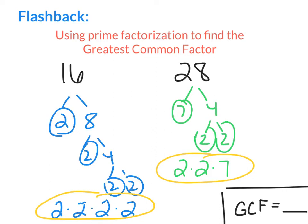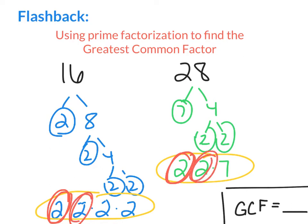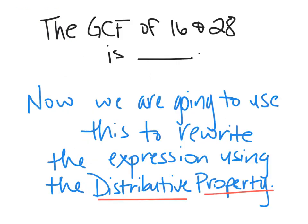I'm now going to compare my lists, and I'm going to start with the number 2. I see that I have one pair of 2s, and I can also make a second pair of 2s. My first group of 2s makes one 2, my second group of 2s makes the second 2. I multiply them together, and my GCF between 16 and 28 is going to be 4.